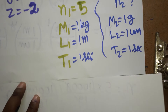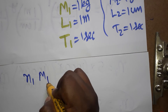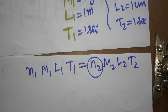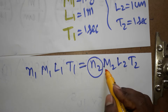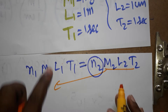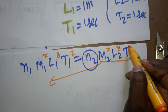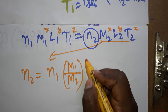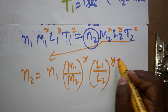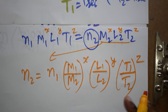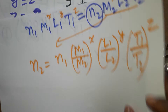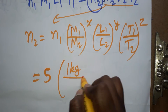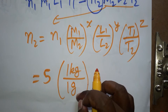We equate both systems to find the relation between joules and ergs: n1·M1^x·L1^y·T1^z = n2·M2^x·L2^y·T2^z. Rearranging, n2 = n1 × (M1/M2)^x × (L1/L2)^y × (T1/T2)^z. Here n1 = 5, M1 = 1 kg, M2 = 1 gram, with power x = 1.